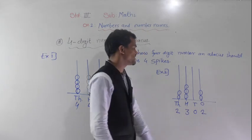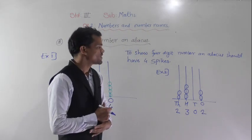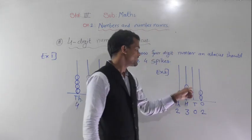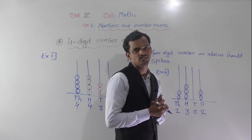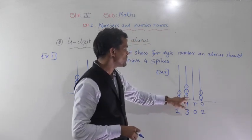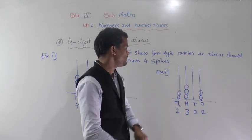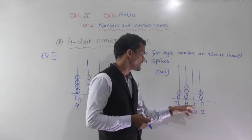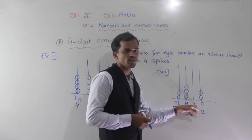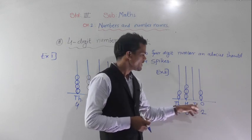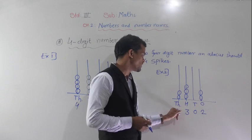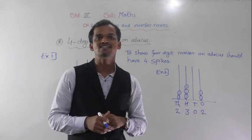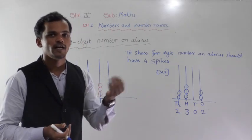See example 2. In the 1s place there are 2 bits. In the 10s place there are no bits, so we put 0 there. In the 100s place there are 3 bits, and in the 1000s place there are 2 bits. So this number is 2302. By using this Abacus we can show any number.